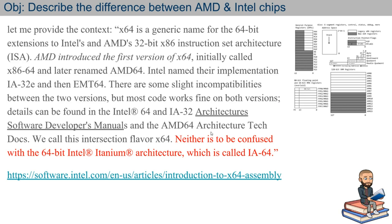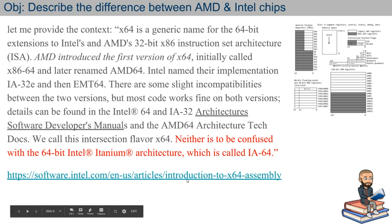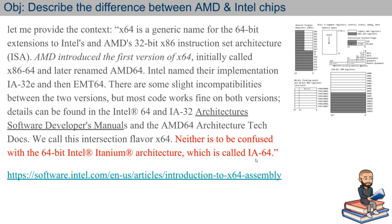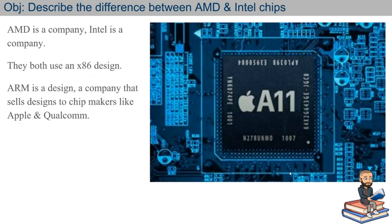Even though there are slight differences, we call this whole intersection concept 'x64.' So if you see x64, it's referring to either Intel or AMD chips. And don't make the mistake of thinking x64 is the same thing as IA-64. IA-64 is apparently a totally different thing than x86-64 — though I don't know much about it, so you could research that.